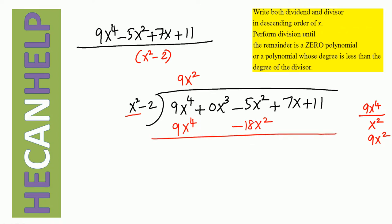We put parentheses around this and subtract. Immediately you see that the 9x to the fourth terms cancel out. What is negative 5x squared minus negative 18x squared? It is negative 5x squared plus 18x squared. And what is negative 5 plus 18? Plus 13. So this is 13x squared, plus 7x, plus 11.